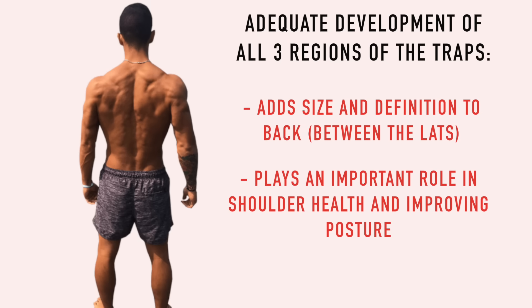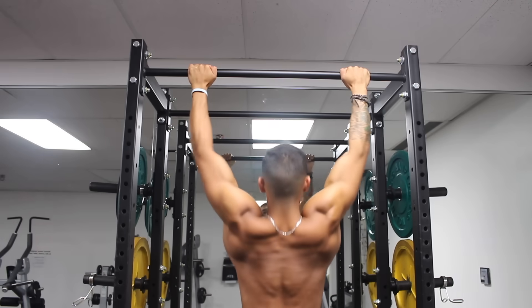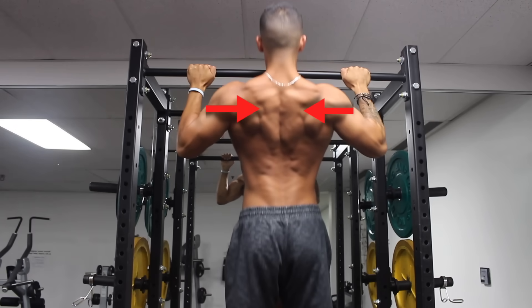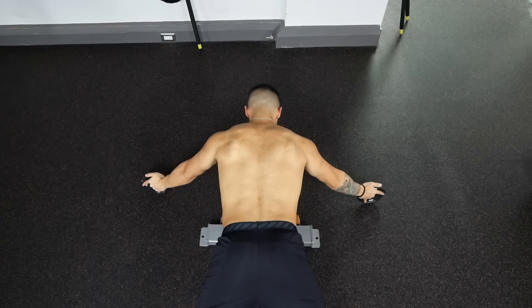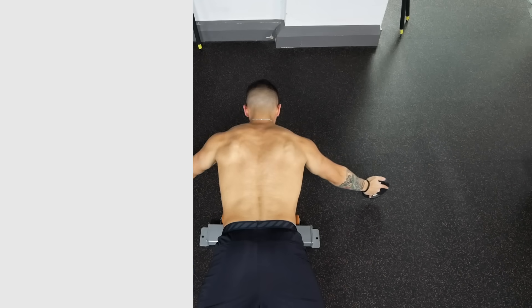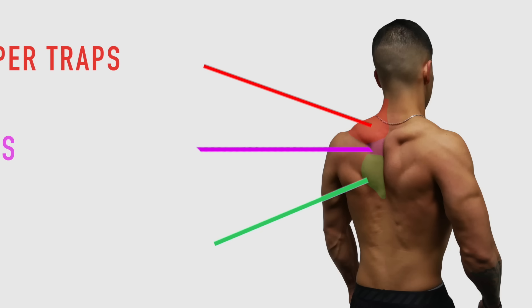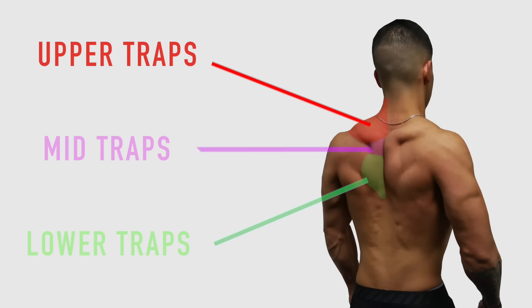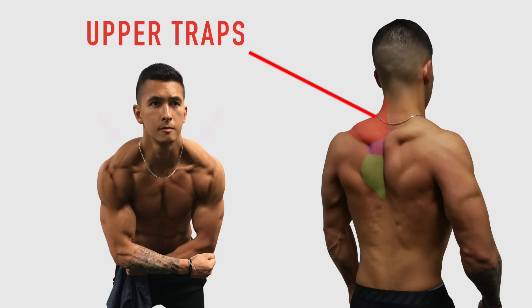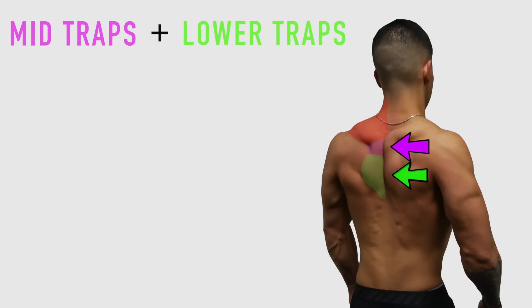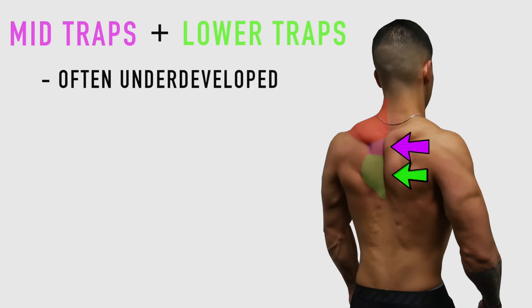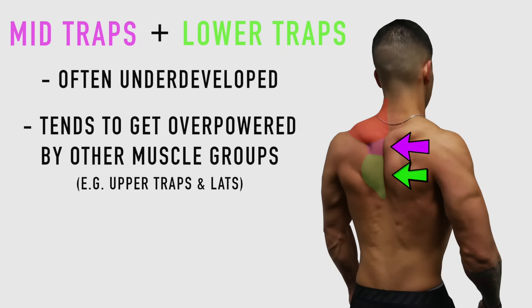Despite the fact that several common pulling exercises will involve the traps, they can be further emphasized through direct trap training. But in order to learn how to best work out the traps, we need to first understand their anatomy. Anatomically, the trapezius muscle is divided into three main regions: the upper, middle, and lower traps. The upper traps are the region most people focus on, likely because they are clearly visible from the front view. The middle and lower traps, on the other hand, are often underdeveloped in most people.